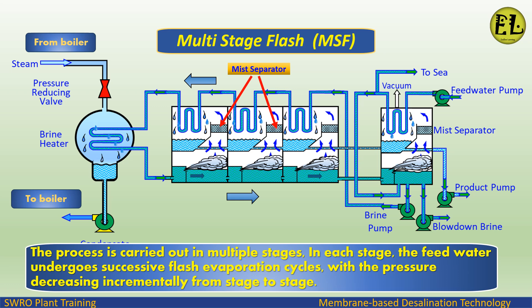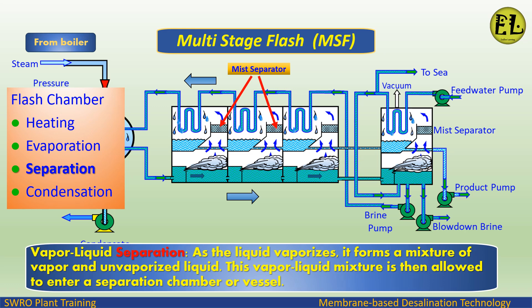The process is carried out in multiple stages. In each stage, the feed water undergoes successive flash evaporation cycles, with the pressure decreasing incrementally from stage to stage. As the liquid vaporizes, it forms a mixture of vapor and unvaporized liquid.